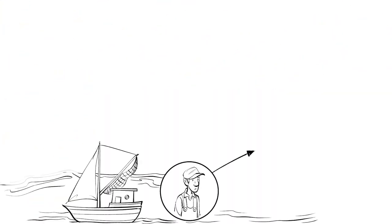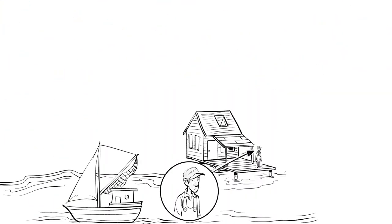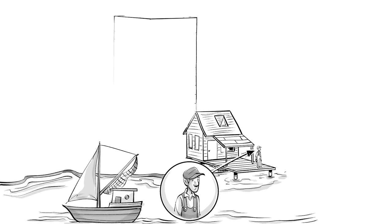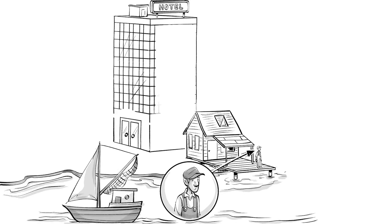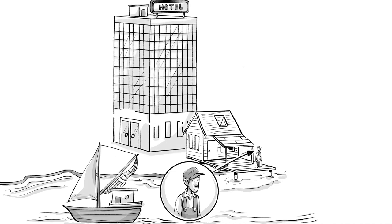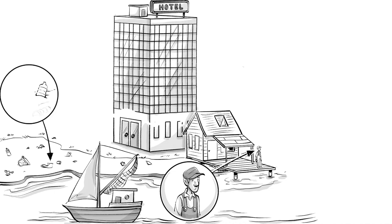Tony, a fisherman, has been living in a house by the lake since he was young. Over the years, the lake is becoming more popular, and one day a large hotel gets built. The hotel obscures all the sunlight and the guests leave their trash on the beach. To Tony, these are negative externalities.